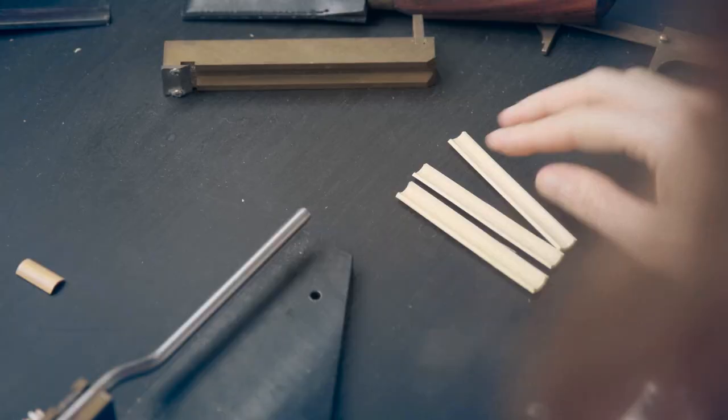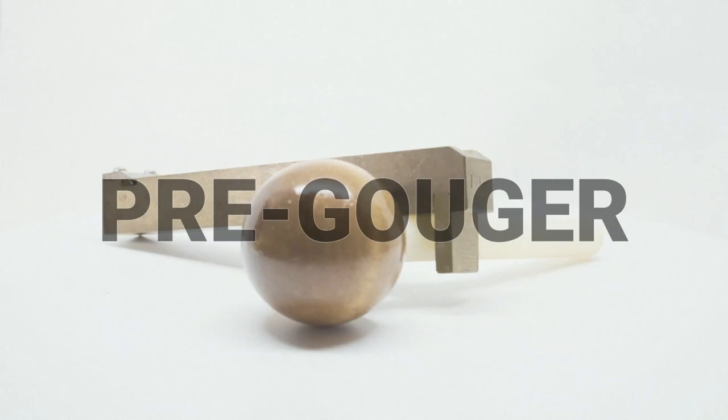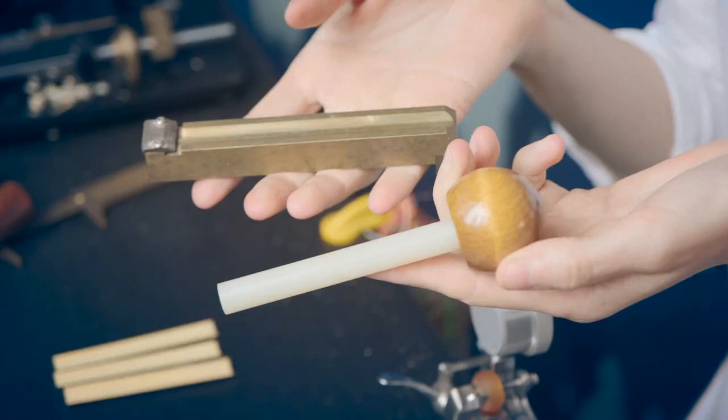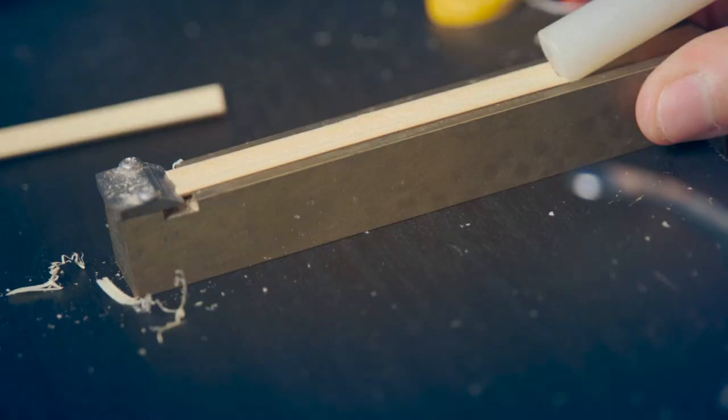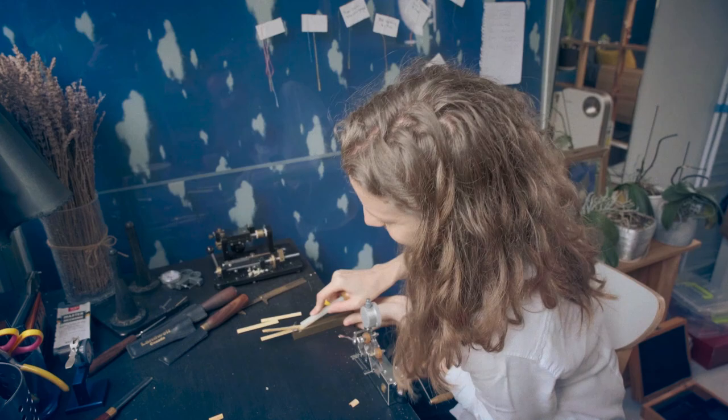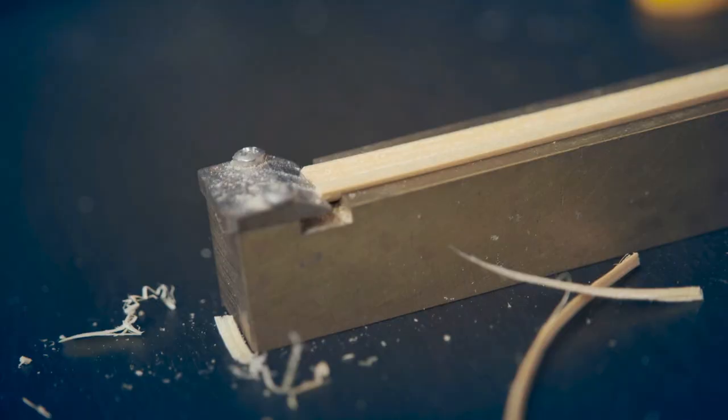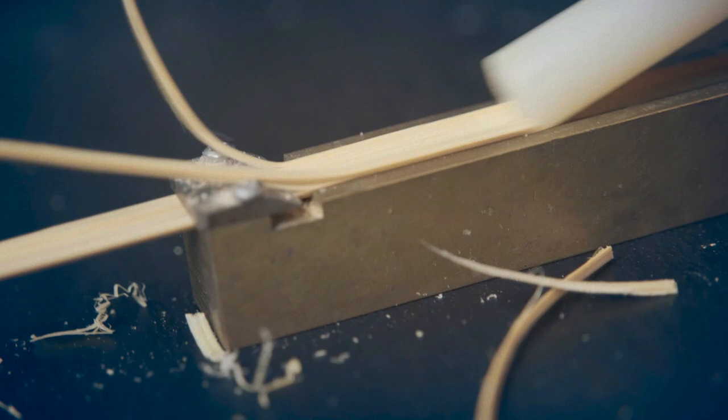Next step, this is called a pre-gouger. There's a blade here. And so what we're going to do is we're going to run the piece of cane with this to push it. And what it's going to do is start the process of gouging so that the gouger isn't working so much. Otherwise, you have to replace the blade quite often.